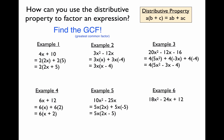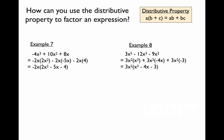For example 6, you might be tempted to factor out a variable, but x is not common to all three terms. Looking at the numeric terms 18, 24, and 12 — they share factors of 2 and 3, but the greatest common factor is 6. Factoring out that 6 leaves us with 6 times the quantity 3x squared minus 4x plus 2. Performing the multiplication confirms you get the original expression.